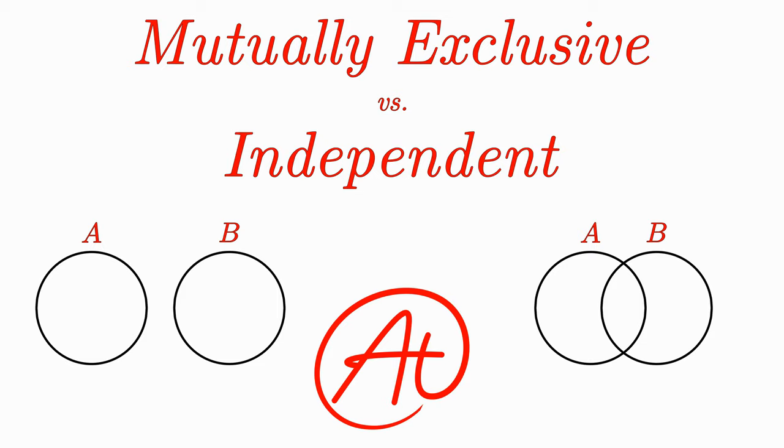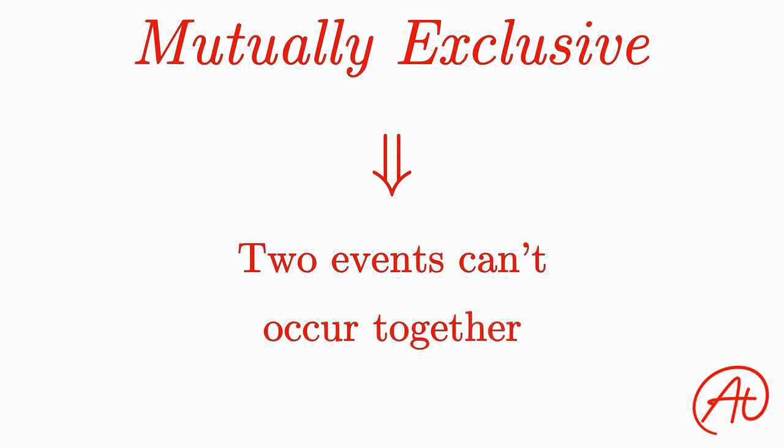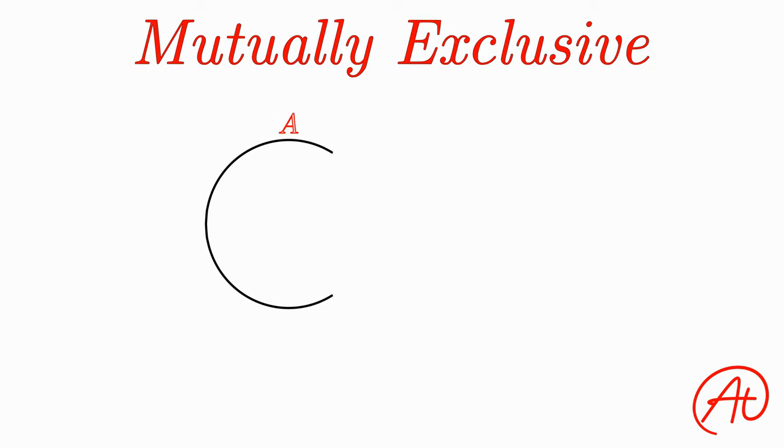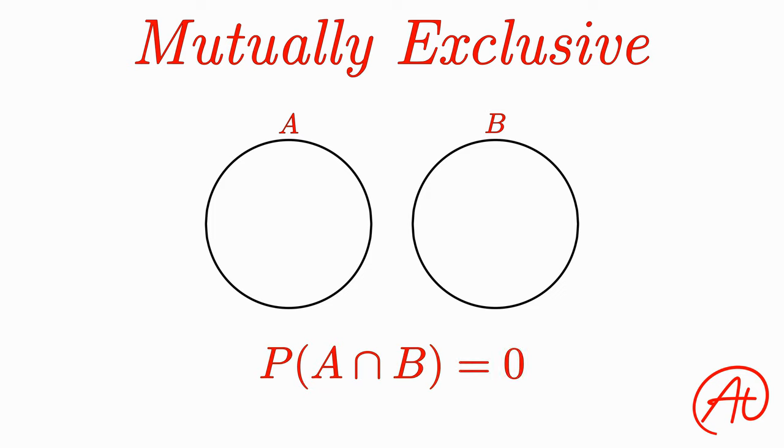So first, let's start with events being mutually exclusive. Basically, when two events are mutually exclusive from one another, those two events can't occur together. In other words, there is no intersection between these two events. Mathematically, this would be written as the probability of A and B equals zero.